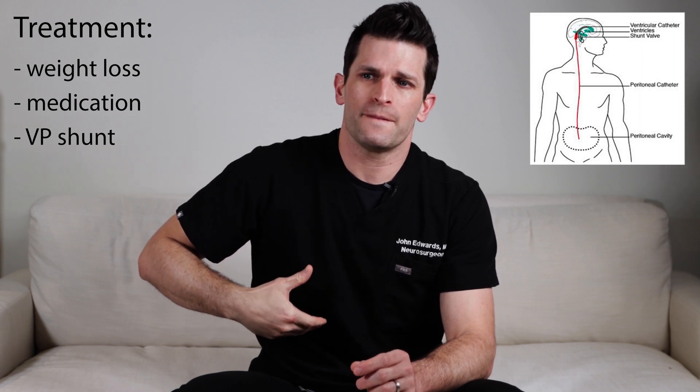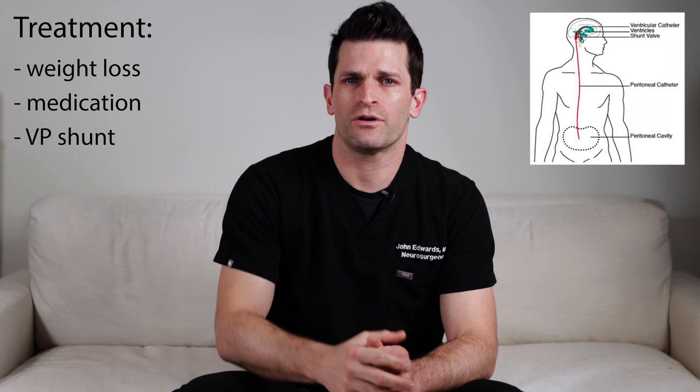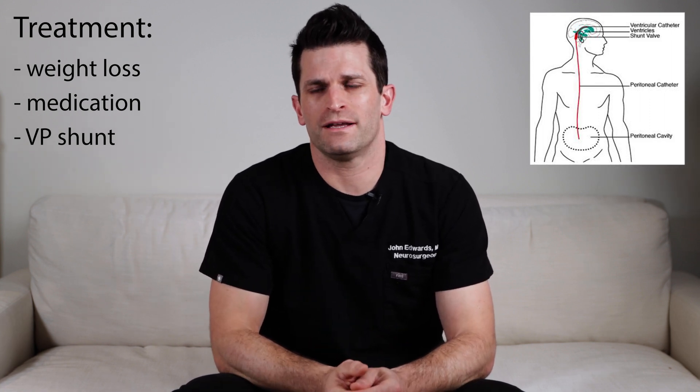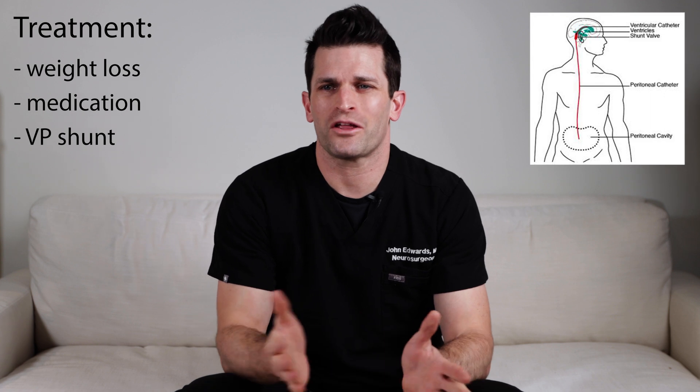Another treatment is called a VP shunt — that's a tube that goes into the brain to drain the spinal fluid down to the abdomen. The intent of that treatment is to help control the pressure by draining the fluid when the pressure is too high. The problem with that treatment is the rate of needing another surgery is about 50%, so there's a high failure rate. If we can avoid doing a VP shunt, that would be the best thing. So the focus should be primarily on weight loss, good nutrition, etc., to see if we can help reverse the symptoms that way.